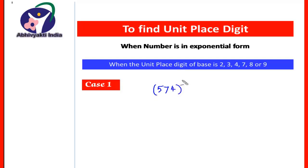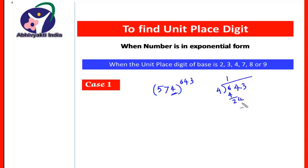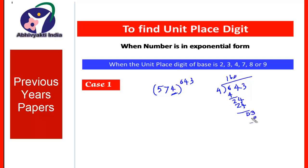Take one more example: 574 to the power 643. Here the unit place of the base is 4, so we divide the index 643 by 4. Dividing 643 by 4 gives a remainder of 3. Since the remainder is 3 and the base is 4, we write it as 4 to the power 3. That equals 4 × 4 × 4 = 64, so the unit place digit of 64 is 4, and therefore the unit place digit of this result will also be 4.